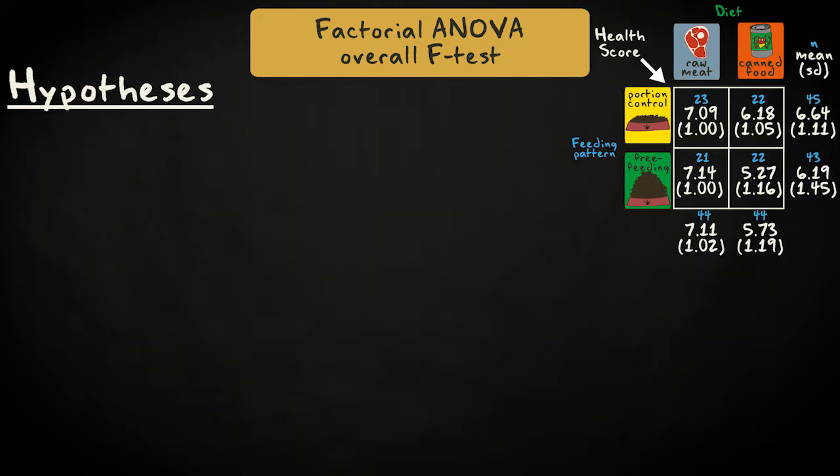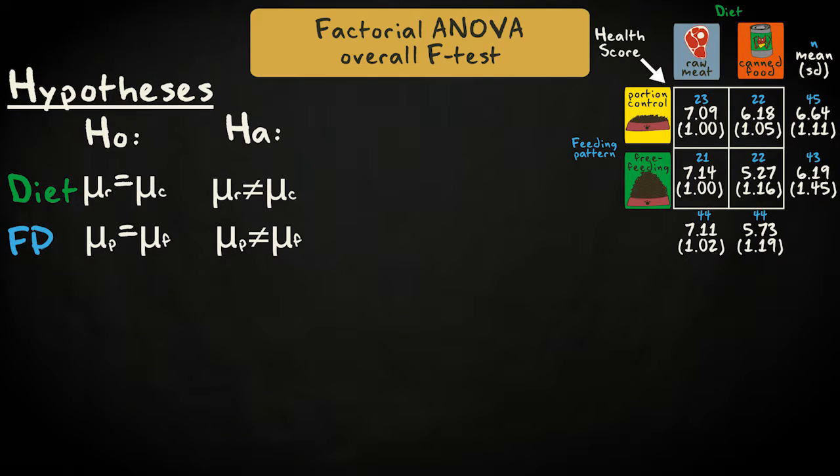We specify statistical hypotheses for each of the main and interaction effects. For each main effect, the null hypothesis states that the relevant marginal population means are equal. The alternative hypothesis states that at least one population mean differs from the rest.